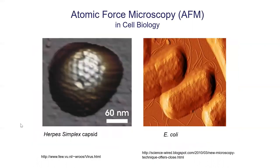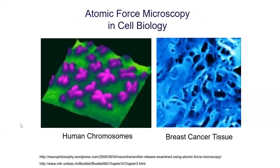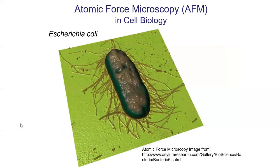This is going to become more and more common as the years go by and the techniques get better. On the left you can see a virus — you can't see a virus with a light microscope, so you need an electron microscope or now an atomic force microscope. There's E. coli with some flagella. Also some human chromosomes, some cancer tissue, and another image of E. coli. The color is added afterwards, and you can see some bumps — it is actually physically touching the specimens.